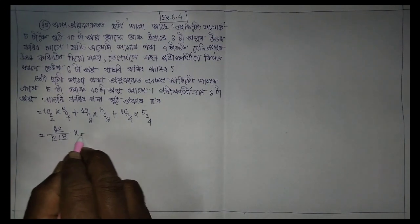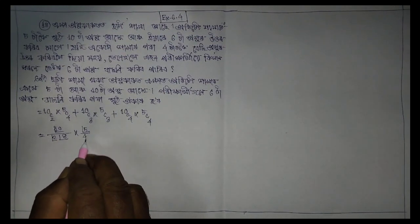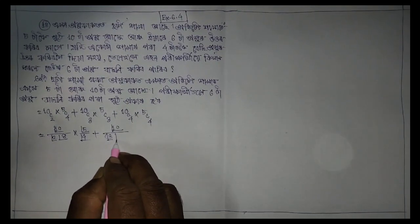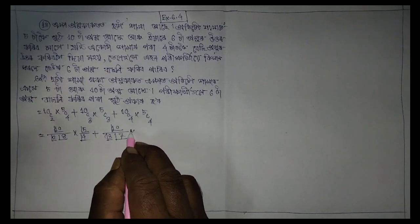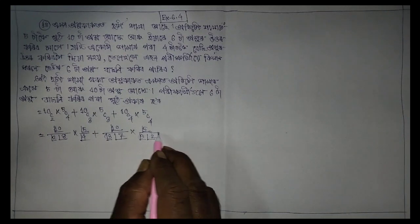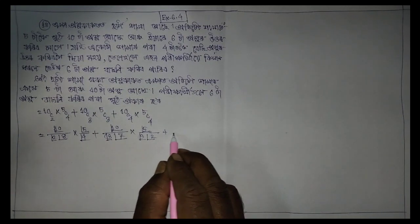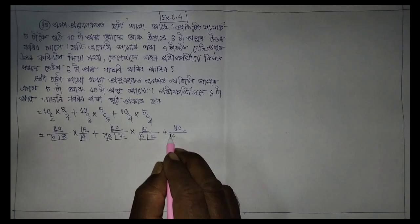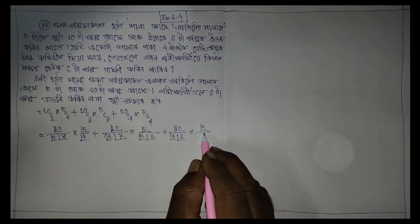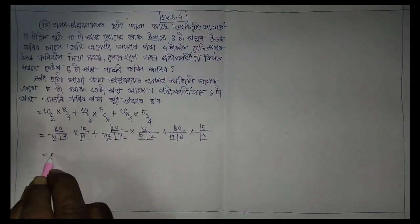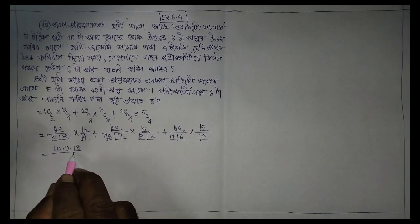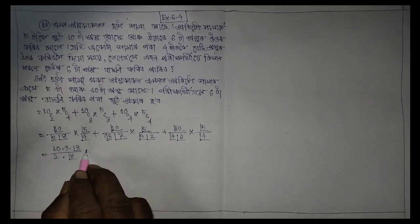f(2) into factorial(5) by factorial(4) plus factorial(10) by factorial(3) by factorial(7) into factorial(5) by factorial(3) and factorial(2) plus factorial(10) by factorial(4) into factorial(6) into factorial(5) by factorial(4) is equal to 10 into 9 into factorial(8) by 2 into factorial(8) into